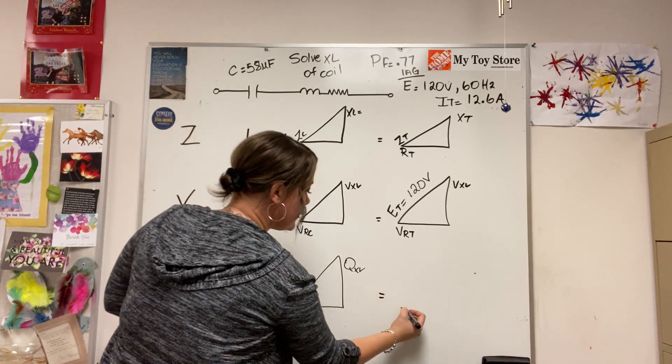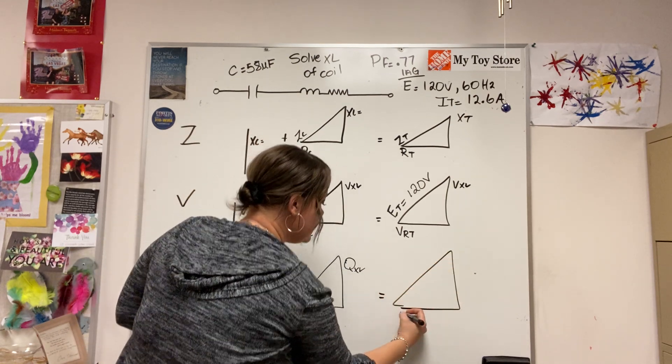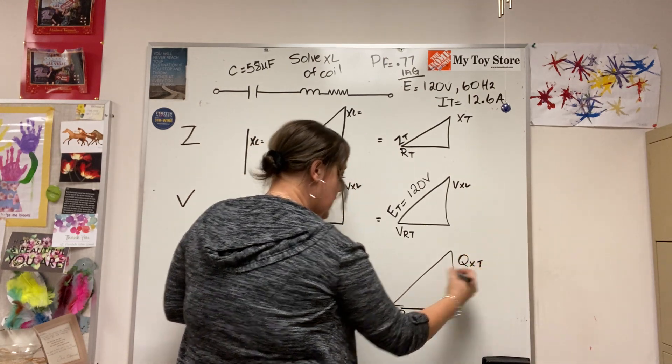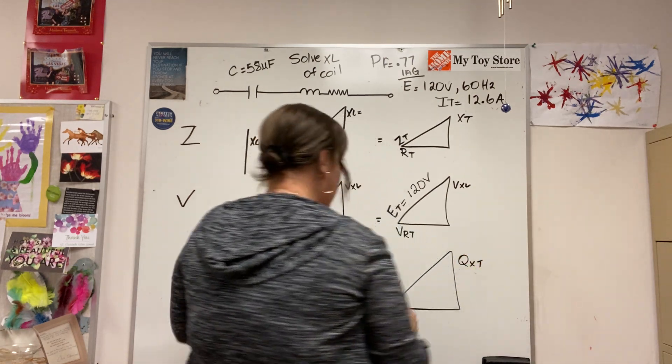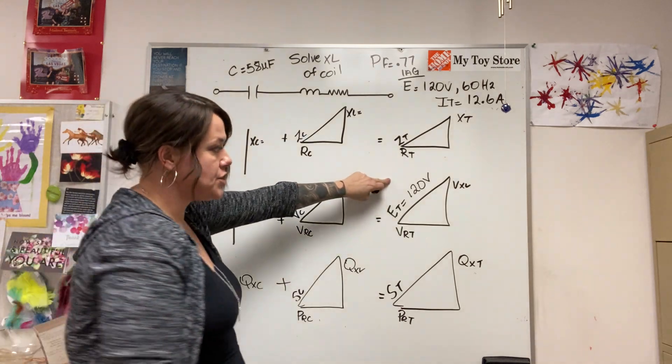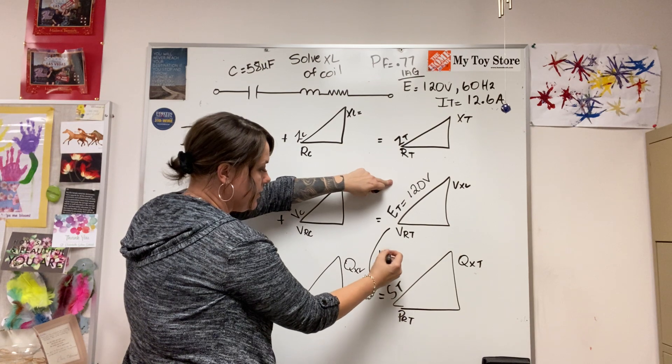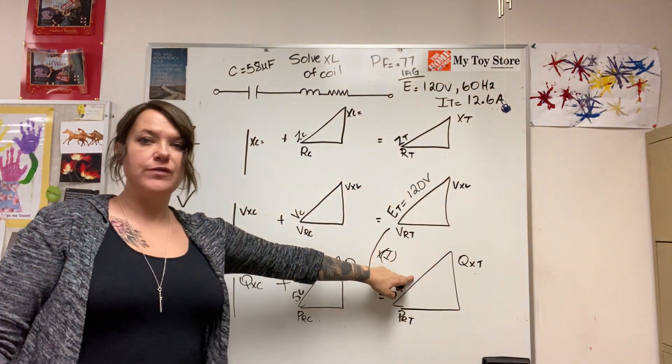And that'll give me a circuit total like this. So PR total, QXT, and then S total. I have the current, I have the voltage, so I can simply take voltage times current and that will give me my apparent power for the circuit.